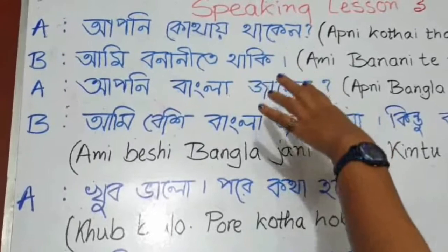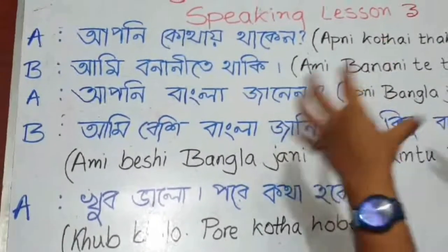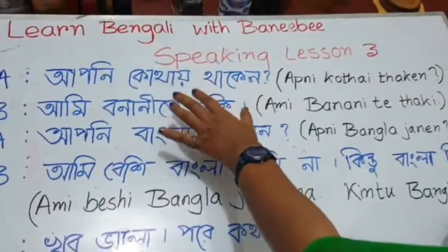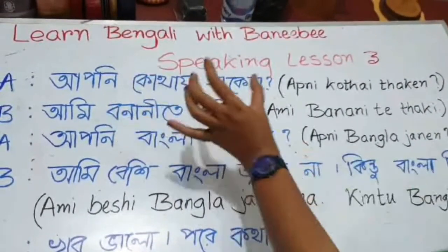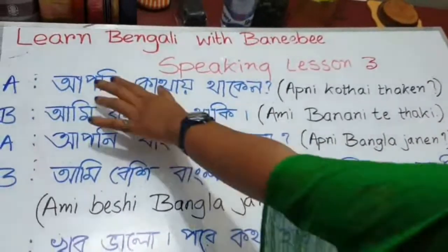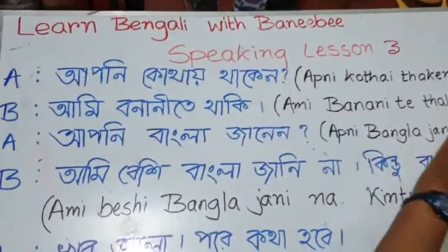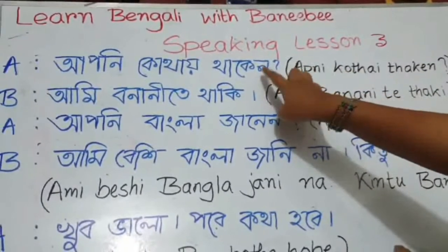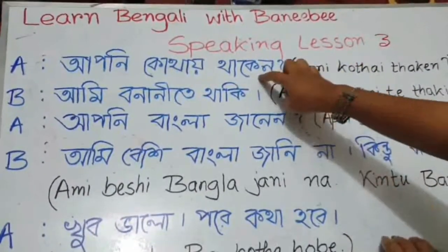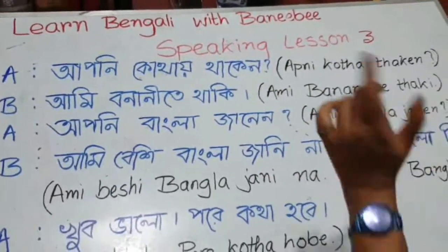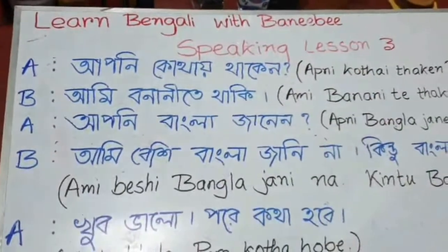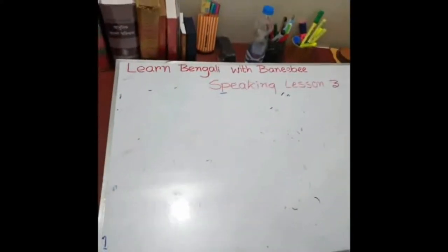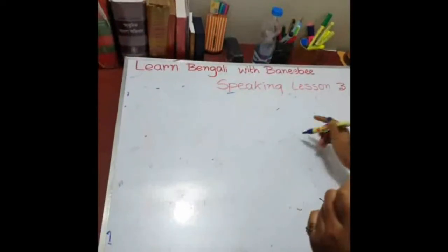Now let's try to see how these sentences are formed. Apni kothai thaken. At first, we need to know this question word. Kothai means where. Apni means you, and Ami means I. Thaka is a verb which means to live. Let's learn this word today: Kothai.